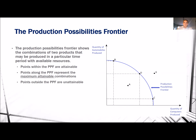Points within the PPF are attainable. Points along the PPF are attainable, and these represent the maximum attainable combinations. Points outside of the PPF are unattainable.